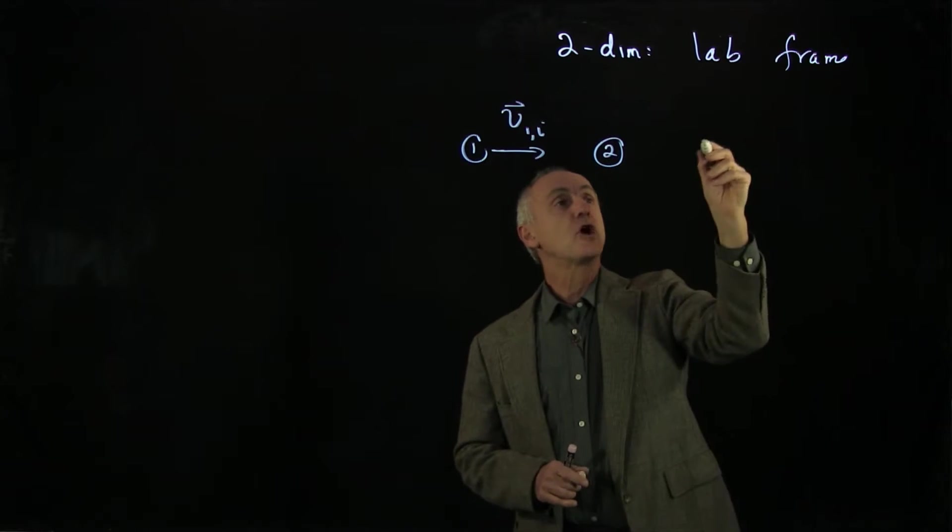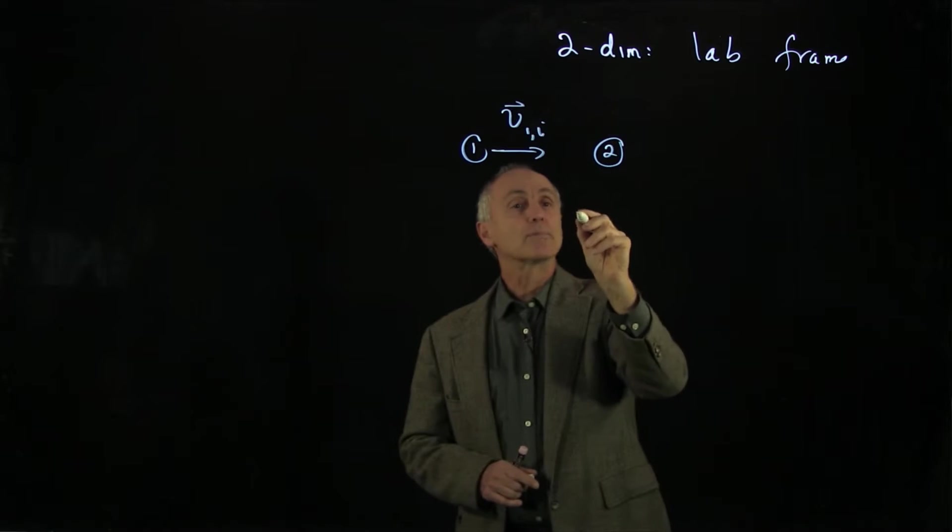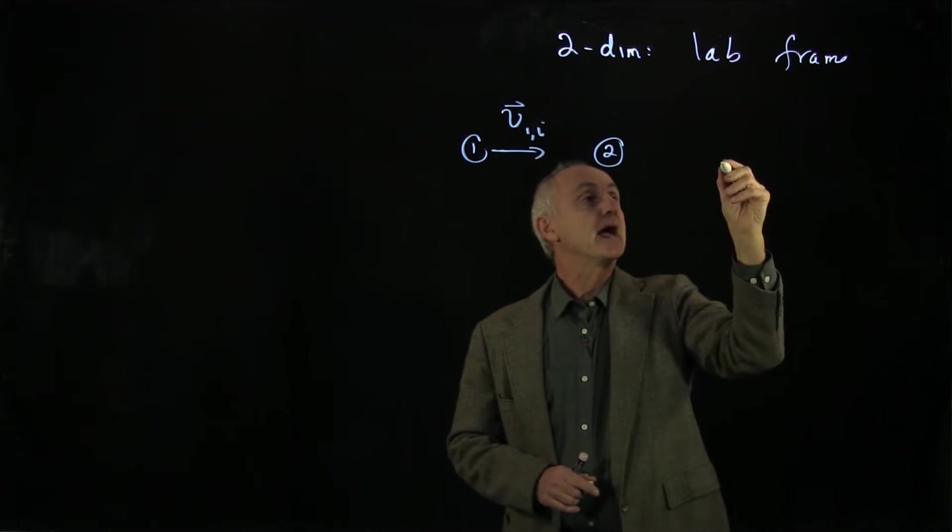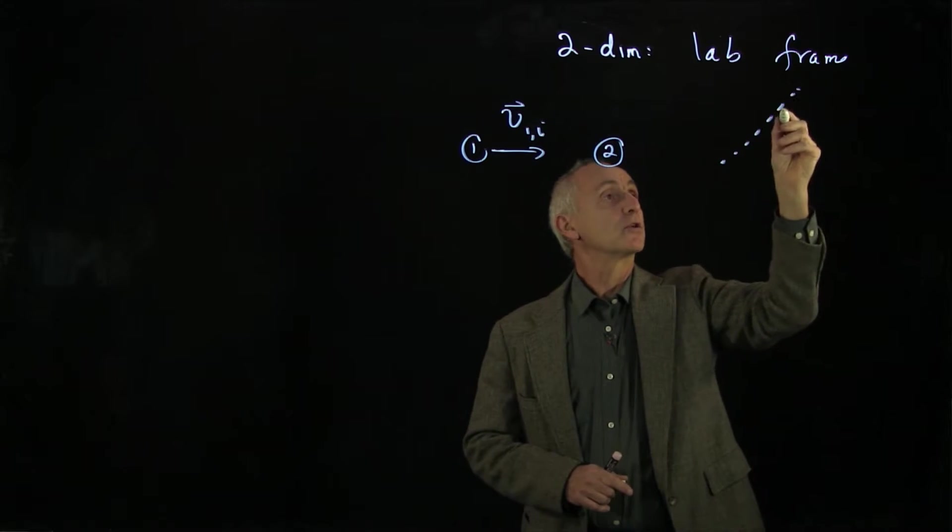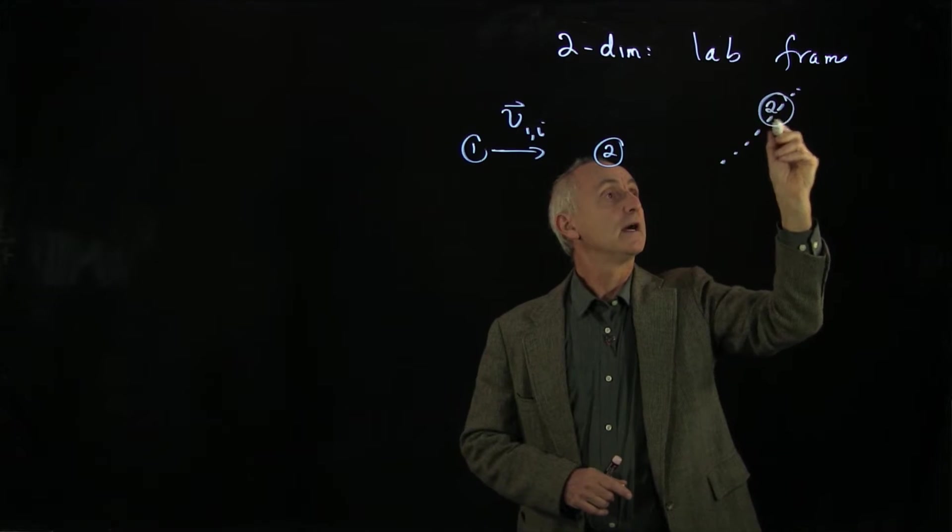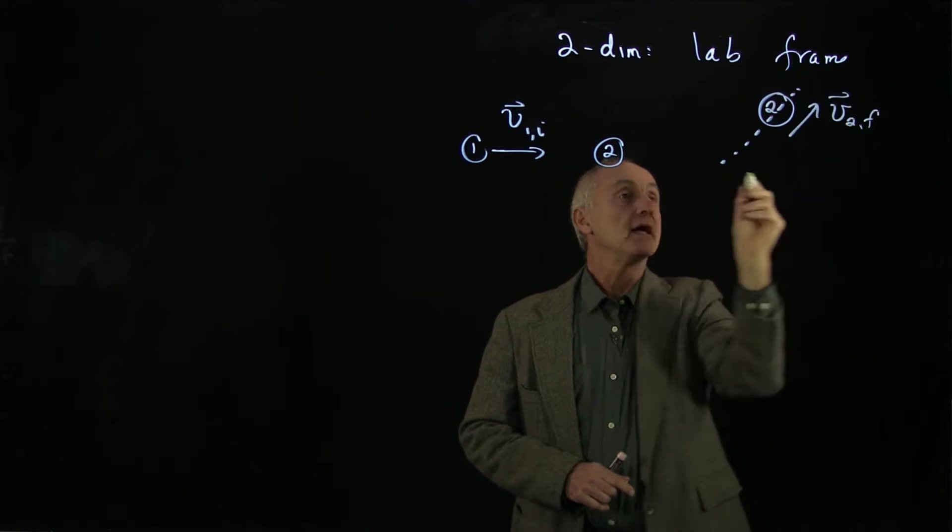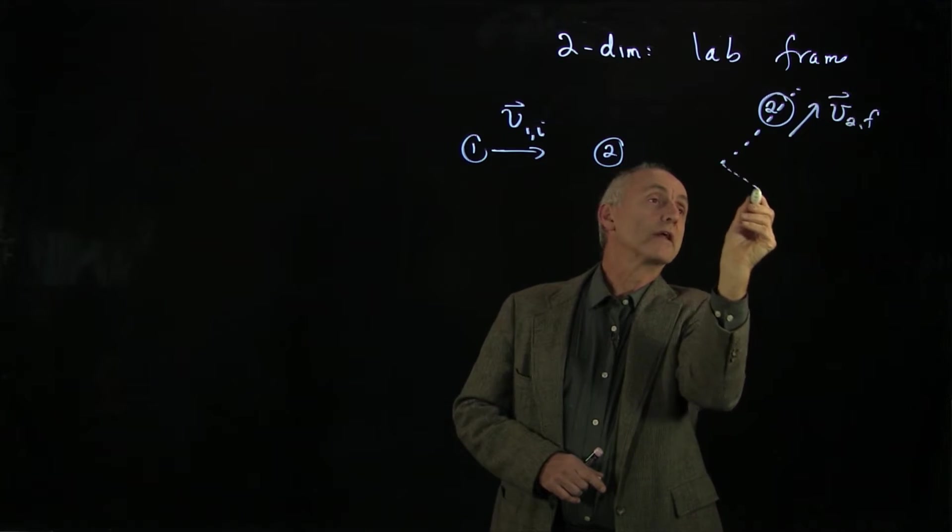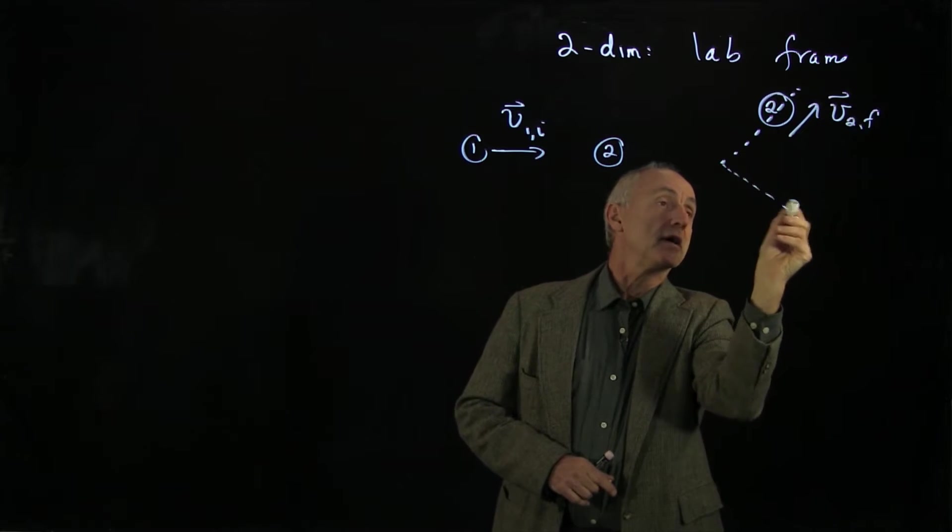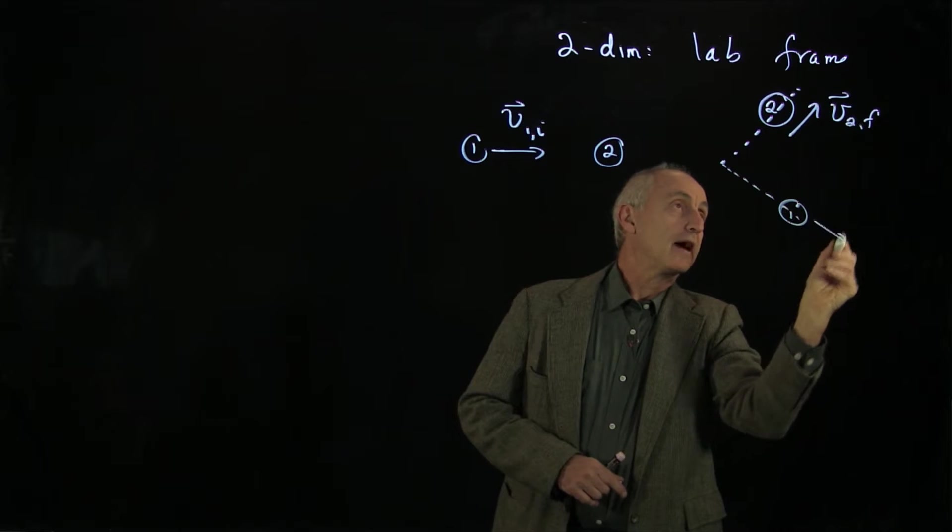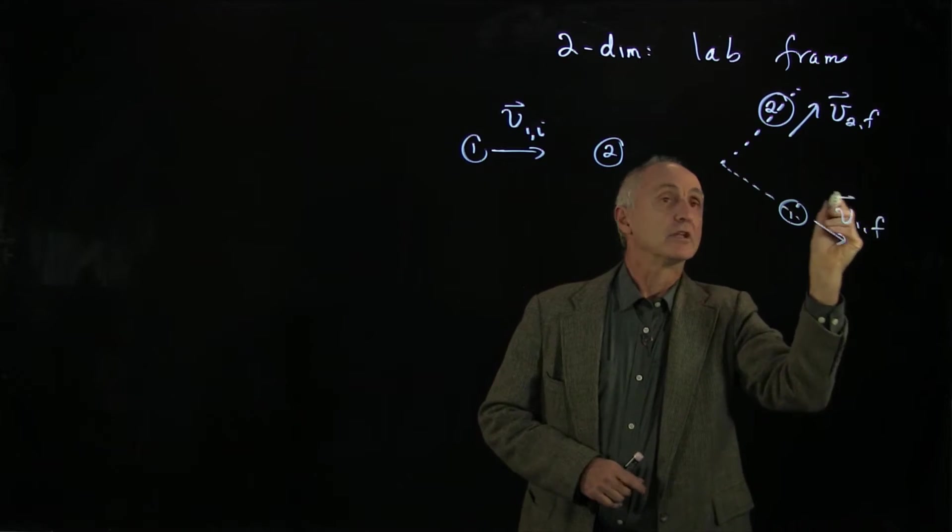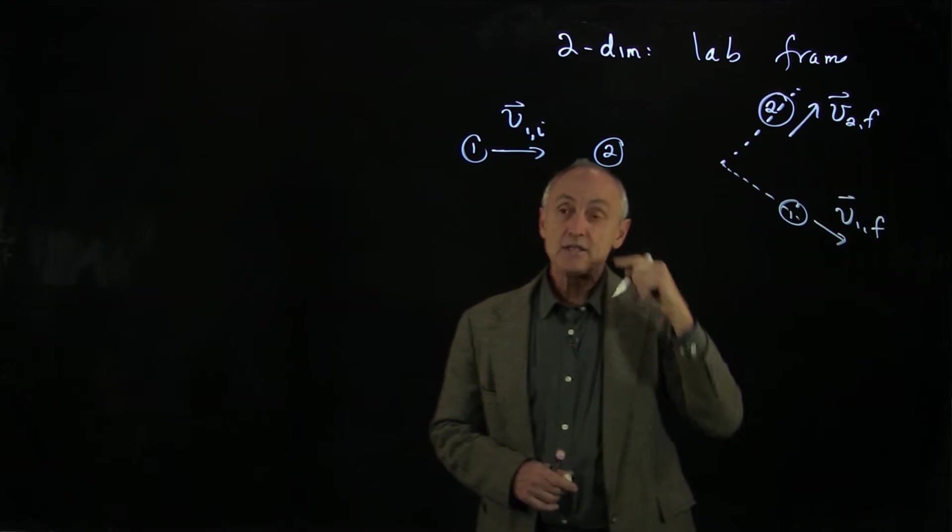After the collision, let's imagine that the target particle is going out at a certain direction. So we'll call that two. And the target particle has a velocity v2 final. And the initial particle going in this direction, we'll call that one. And that is its outcoming velocity. Now, in this collision,